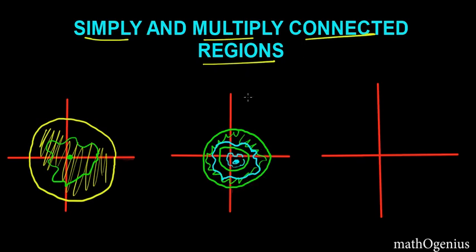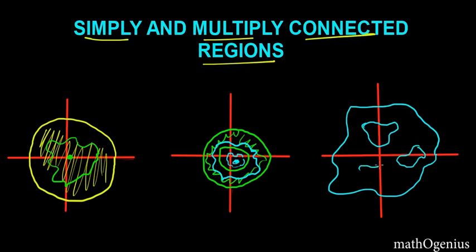You can understand this simply: a region which does not have any holes in it is known as a simply connected region, and a region which has holes in it is known as multiply connected regions. For example, this is a closed curve, this is a region under it, and there are some other closed curves. This part right here is our region, so this is also a multiply connected region.